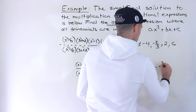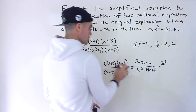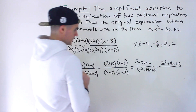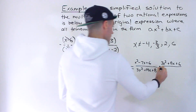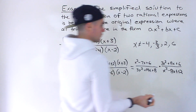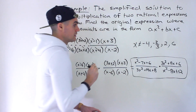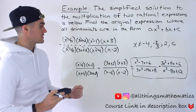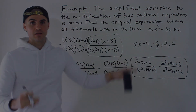For the second fraction, FOILing 3x plus 2 times x plus 3 gives 3x squared plus 9x plus 2x plus 6, which is 3x squared plus 11x plus 6. And the denominator, x minus 2 times x minus 6, expands to x squared minus 8x plus 12. So that's an example of the original question — if you simplify it as done in previous videos, the solution ends up being the given expression with those restrictions.